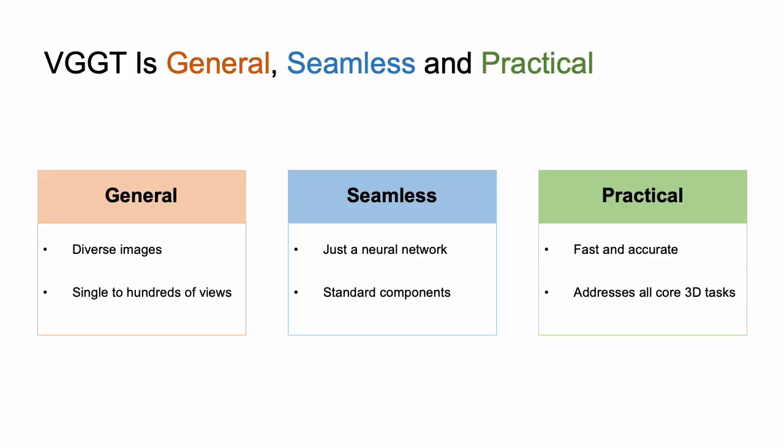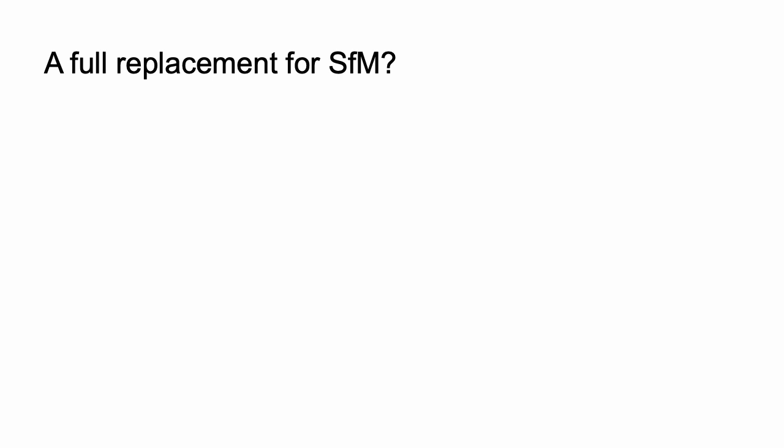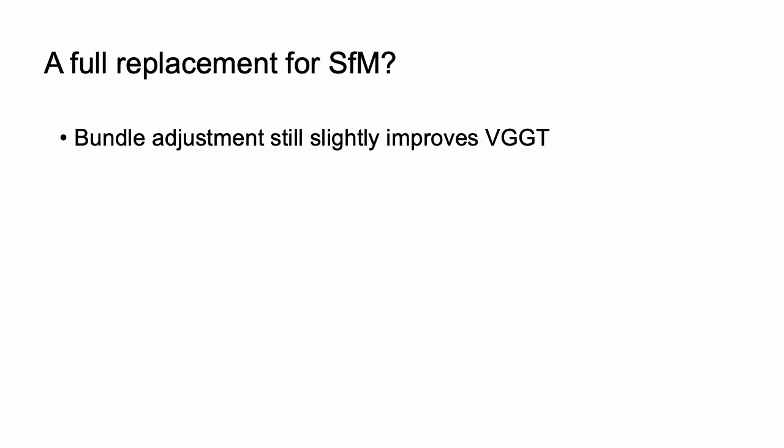Overall, VGG-Transformer is general, seamless, and practical. It handles diverse input domains and a variable number of input views with ease. It is just a feed-forward neural network without the need for optimization, and it predicts all core 3D properties in seconds — fast, efficient, and usable. Is it a full replacement for structure from motion? We believe not, at least not yet. Bundle adjustment can still slightly boost the performance of VGG-Transformer, and for very large-scale scene reconstruction such as building Rome in a day from 2 million images, optimization is still necessary.